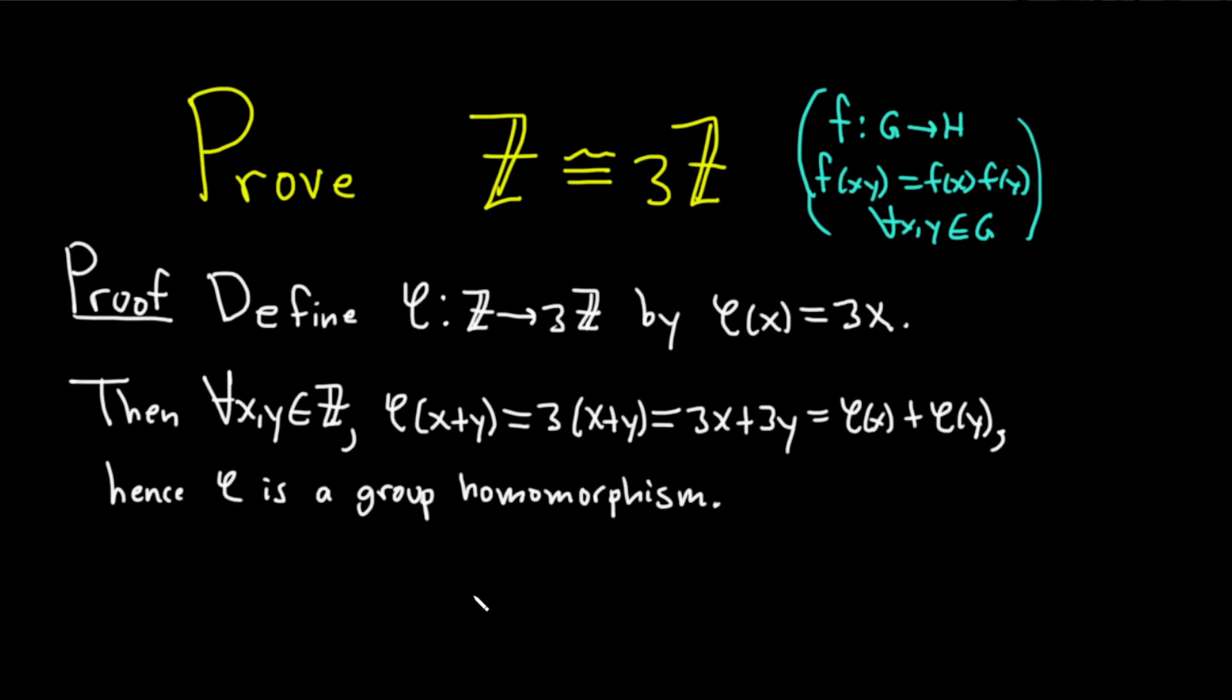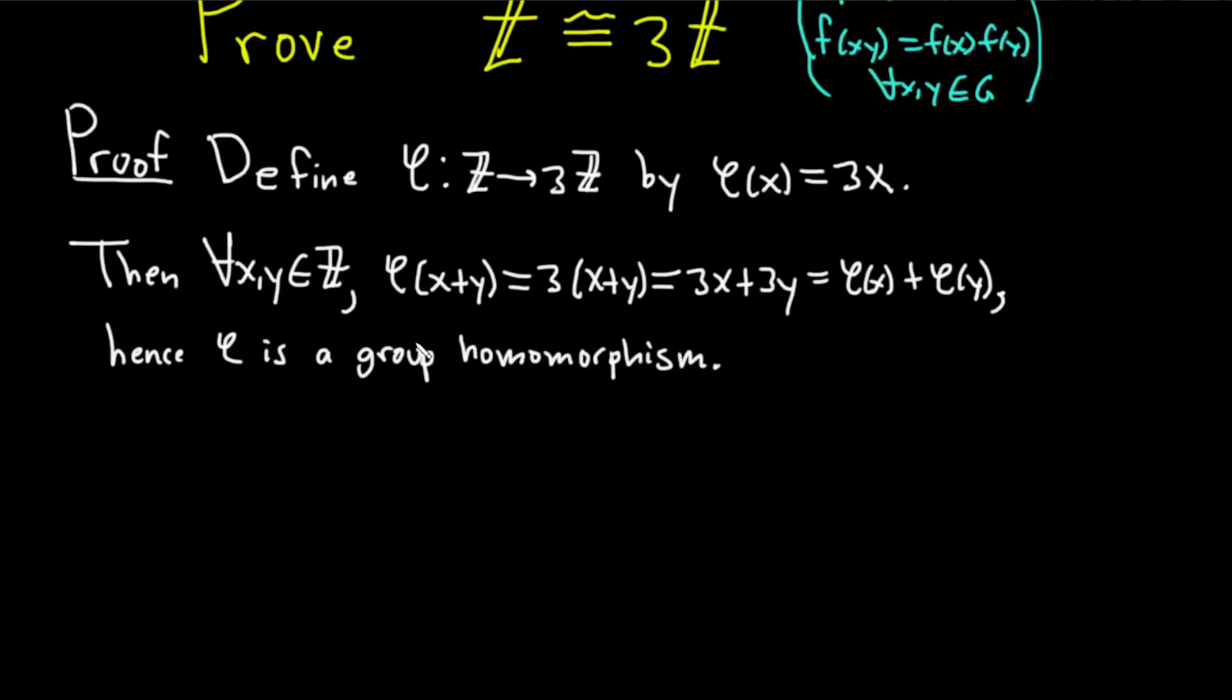Now we have to show that phi is one-to-one, and we also have to show that it is onto. Let's focus on phi is one-to-one. So suppose phi of x equals phi of y for x, y, and Z.